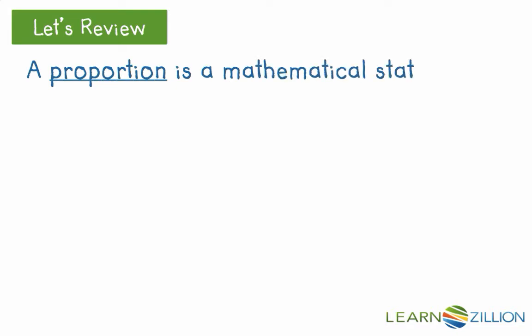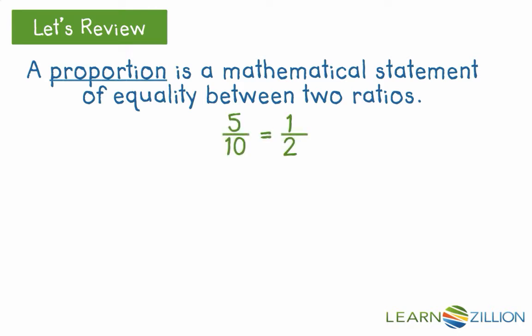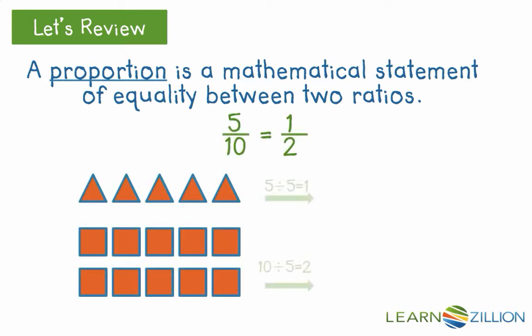A proportion is a mathematical statement of equality between two ratios. 5 to 10 equals 1 to 2 is a proportion. In this example we compare 5 triangles to 10 squares, or 1 triangle for every 2 squares when simplified.